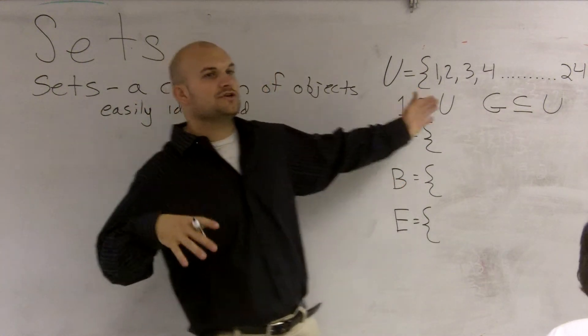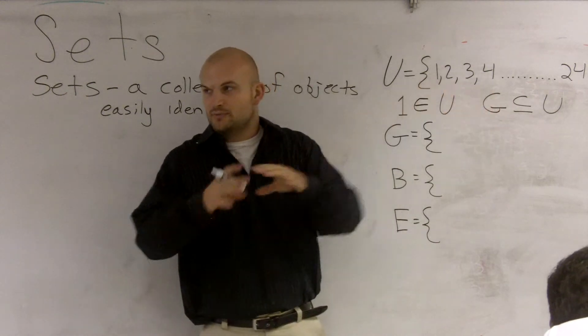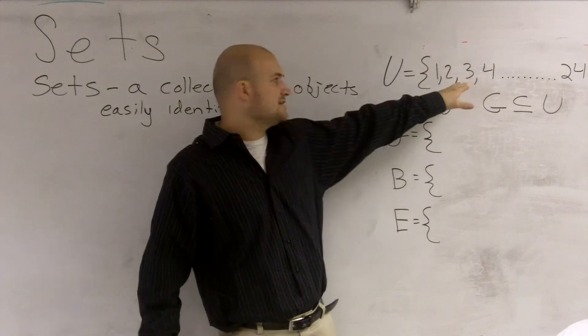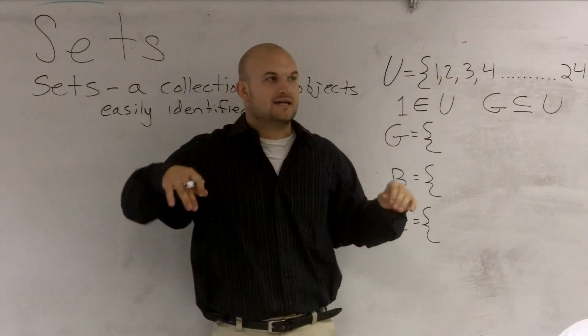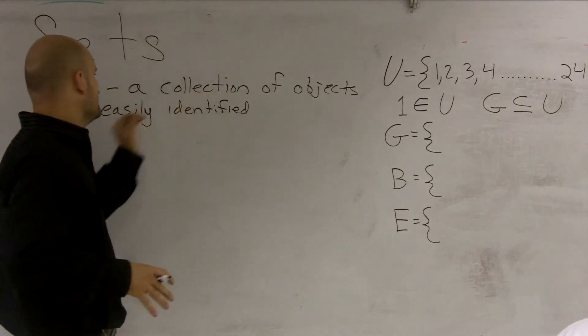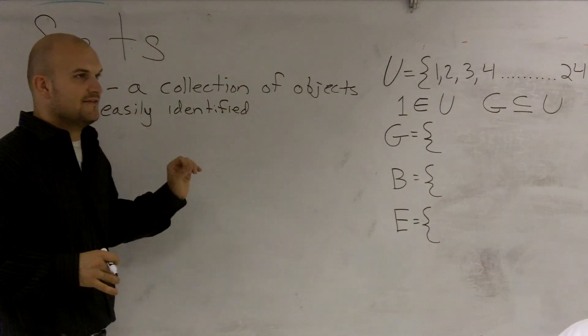What I did was now, rather than using your names, I'm using your number to complete in our set. So, this class is a set of 1 through 24. So, this set represents everybody that's in this class. The set is a collection of objects that's easily identified.